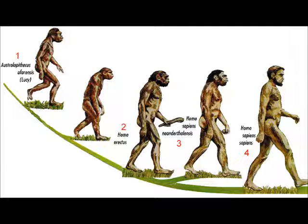Number 8: the problem with the dating system for the existence of different species. First there's carbon dating, and then there's strata dating — or what is more commonly referred to as relative dating — both of which have flaws in their dating systems.